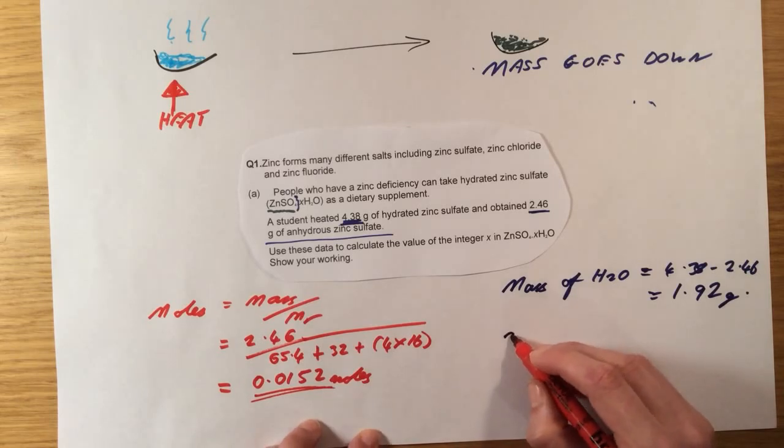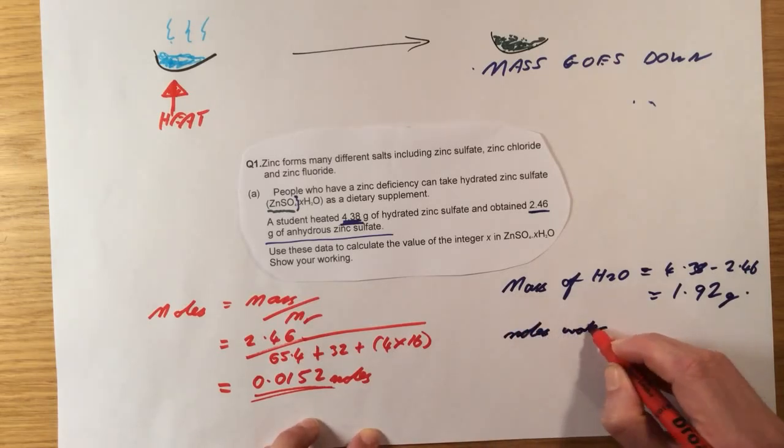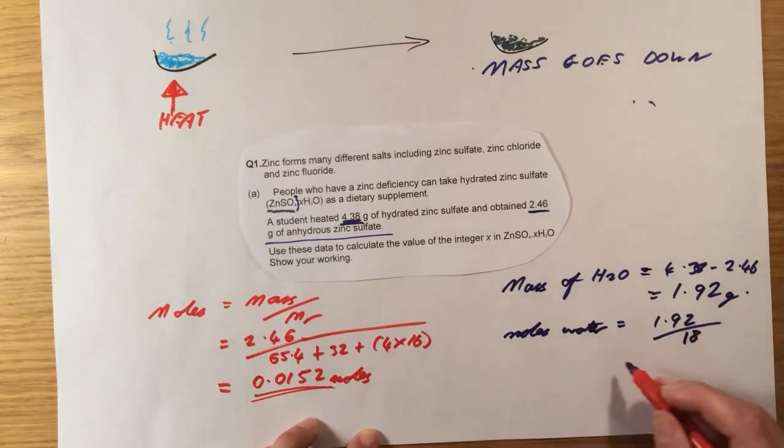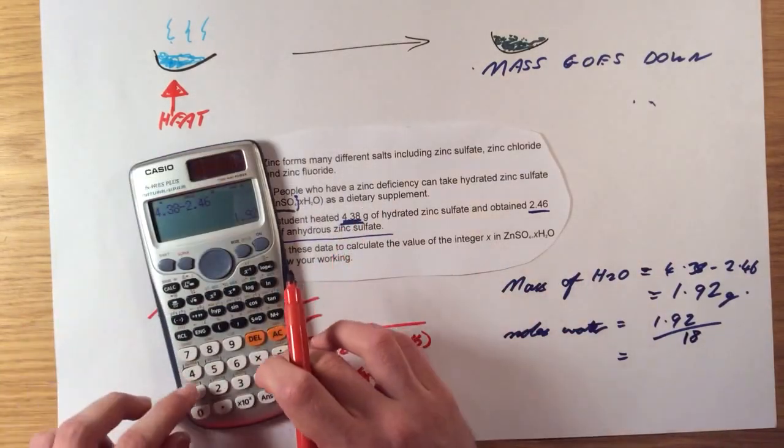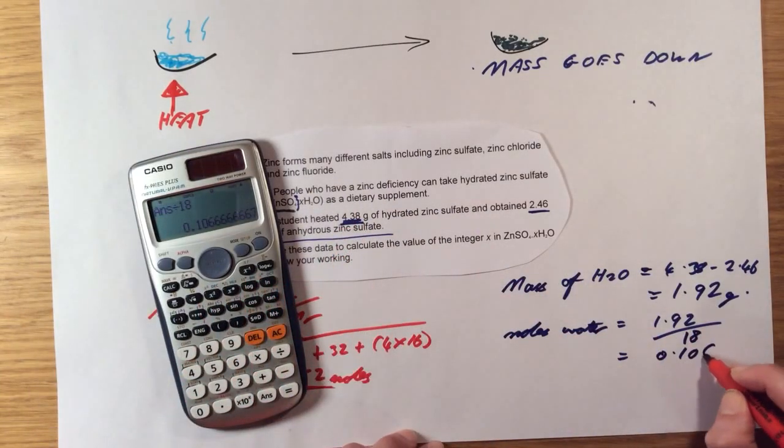So what I can now do is work out the number of moles of water. Exactly the same thing again. Moles of water is going to be mass divided by MR, 1.92. The MR of water is 16 plus 2 which is 18, and this gives me an answer of 0.1066.